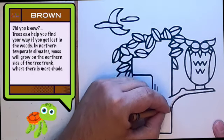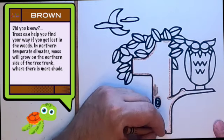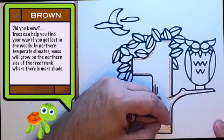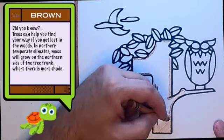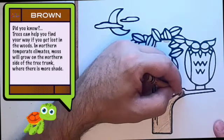Did you know? Trees can help you find your way if you get lost in the woods. In northern temperate climates, moss will grow on the northern side of the tree trunk, where there is more shade.